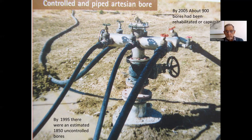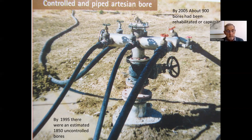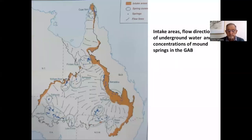That involved capping something in the order of 900 bores or rehabilitating their casing. Even ten years later, there were something in the order of 1,800 to 1,900 uncontrolled bores — an enormous wastage of water.